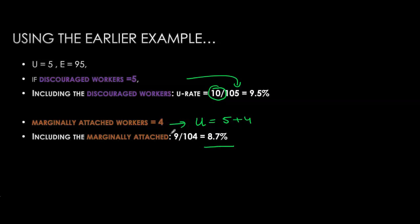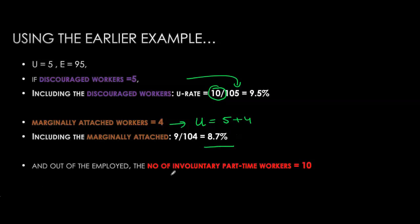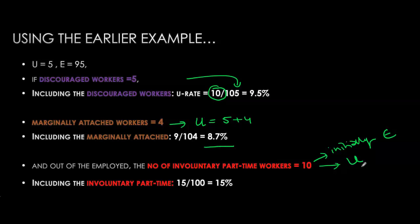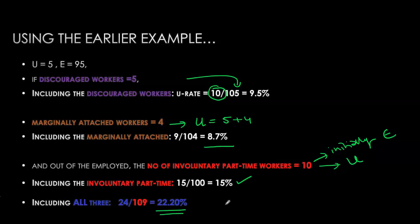Lastly, including 10 million involuntary part-time workers as unemployed — since they were already in the labor force, the labor force size stays the same, but the number of unemployed rises to 15 million — pushing the unemployment rate from 5% to 15%. If we include all three categories together with the official 5 million unemployed, the overall unemployment rate jumps from 5% to 22.2%, significantly higher than the official rate, showing that the official rate substantially underestimates true unemployment.